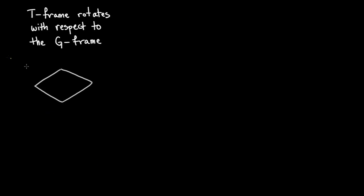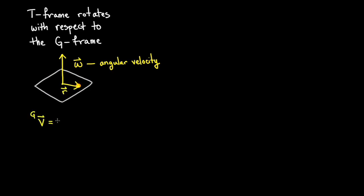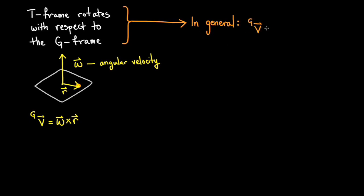According to the G frame, the T frame is rotating with some angular velocity represented by the vector omega. Omega points along the axis of rotation with magnitude equal to the angular velocity. The velocity of the disk according to the G frame is entirely due to the rotation of the T frame, and thus can be represented by omega cross r. In general, any object that is moving on the turntable will have a velocity that can be defined in the T frame. The velocity in the G frame can be found as the sum of the velocity in the T frame and the velocity that arises due to the rotation of the T frame with respect to the G frame.